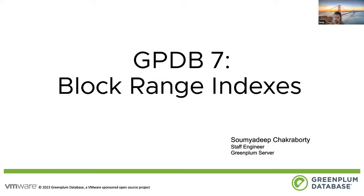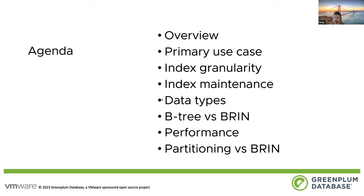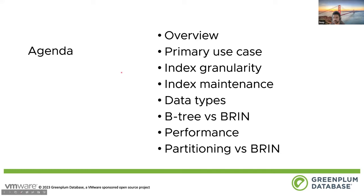Hello, my name is Somya Deeb, and we are going to be talking about block range indexes, or BRIN indexes, which is a new feature for Greenplum 7. We are going to go over an overview of how BRIN indexes work, talk about the primary use cases, what the index granularity looks like and how you can tune it, how you maintain BRIN indexes, the specific administrative tasks, the data types that BRIN is supported on, and then we'll do a comparative study with B-tree and BRIN indexes. We'll look at some performance numbers, and finally, we can also talk about partitioning versus BRIN, which are two similar approaches for data skipping.